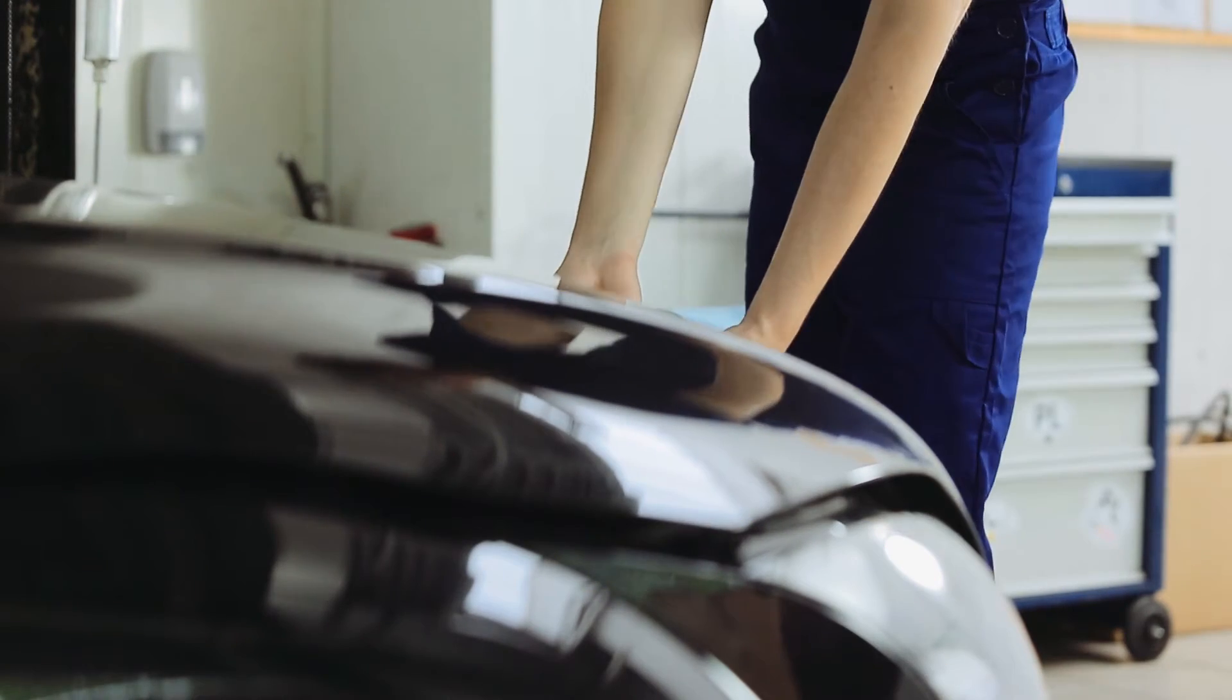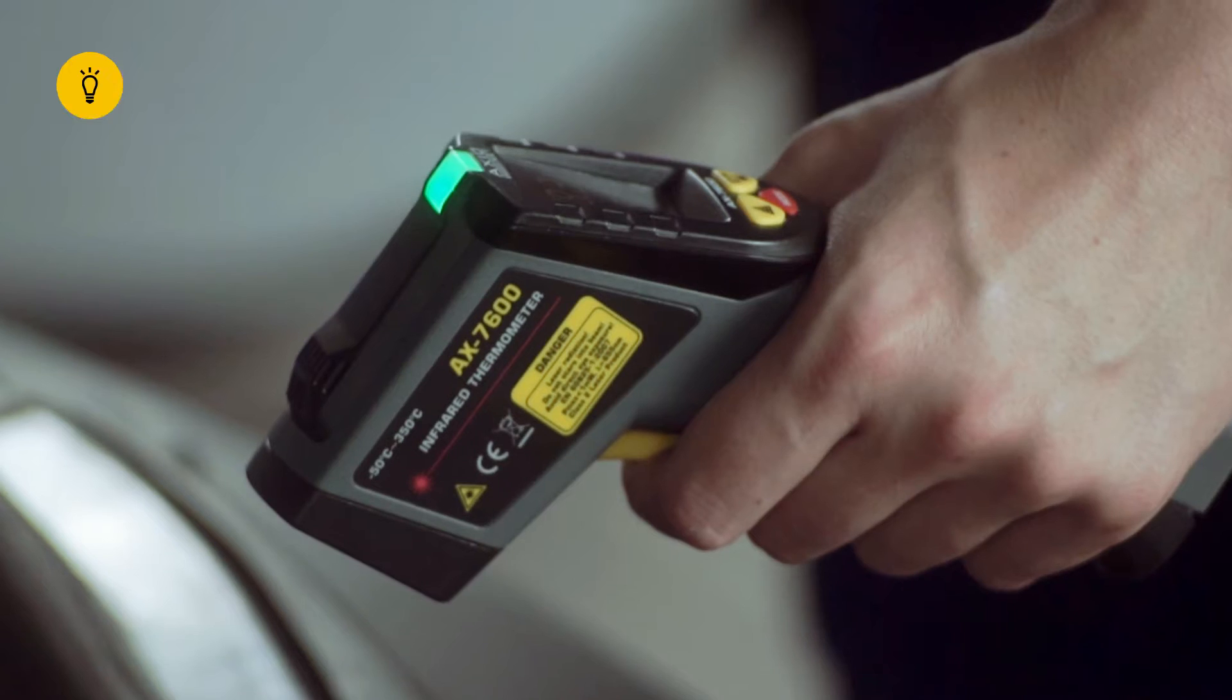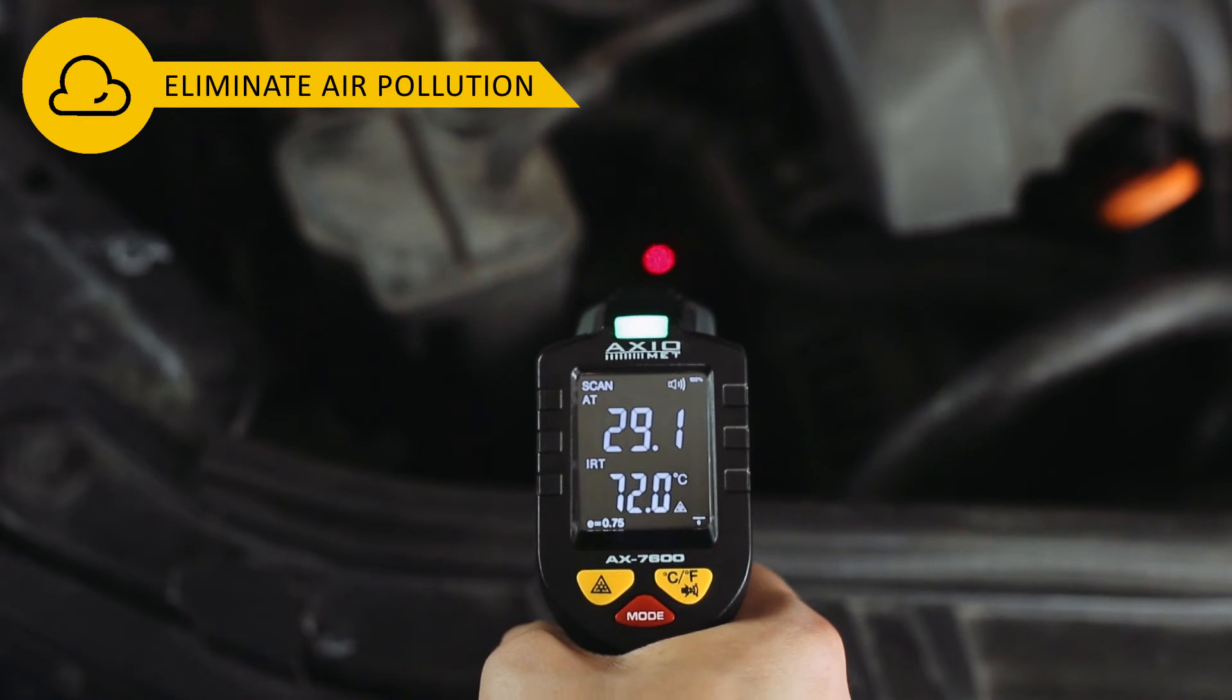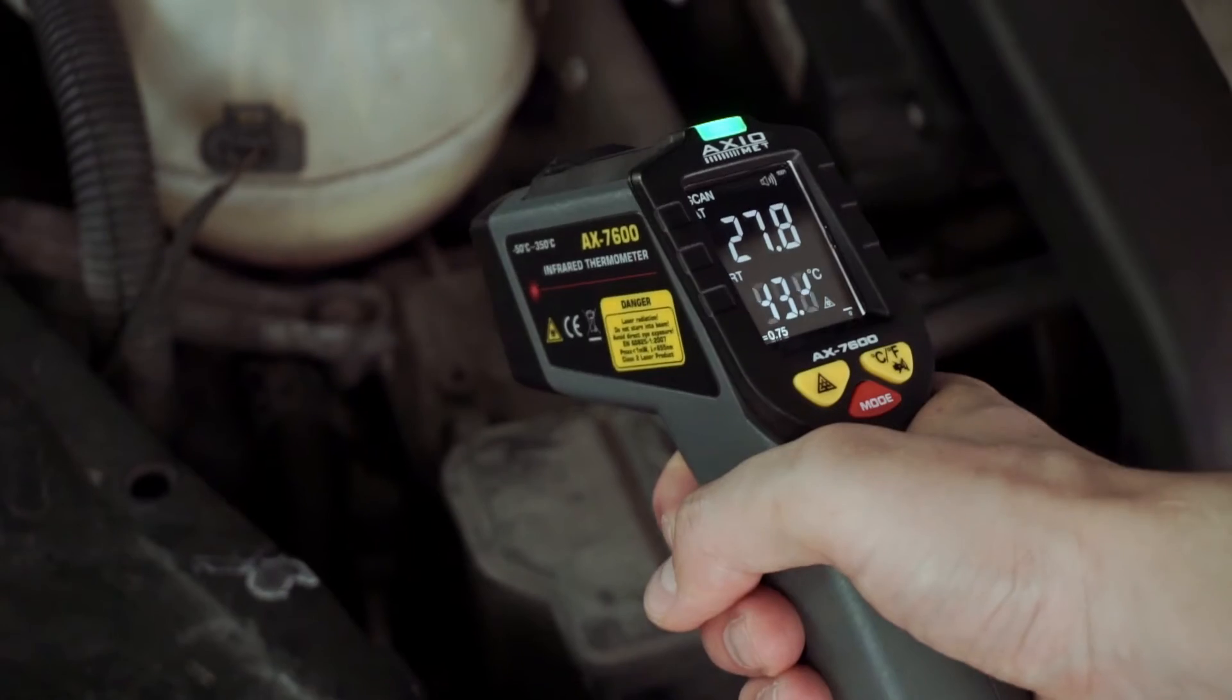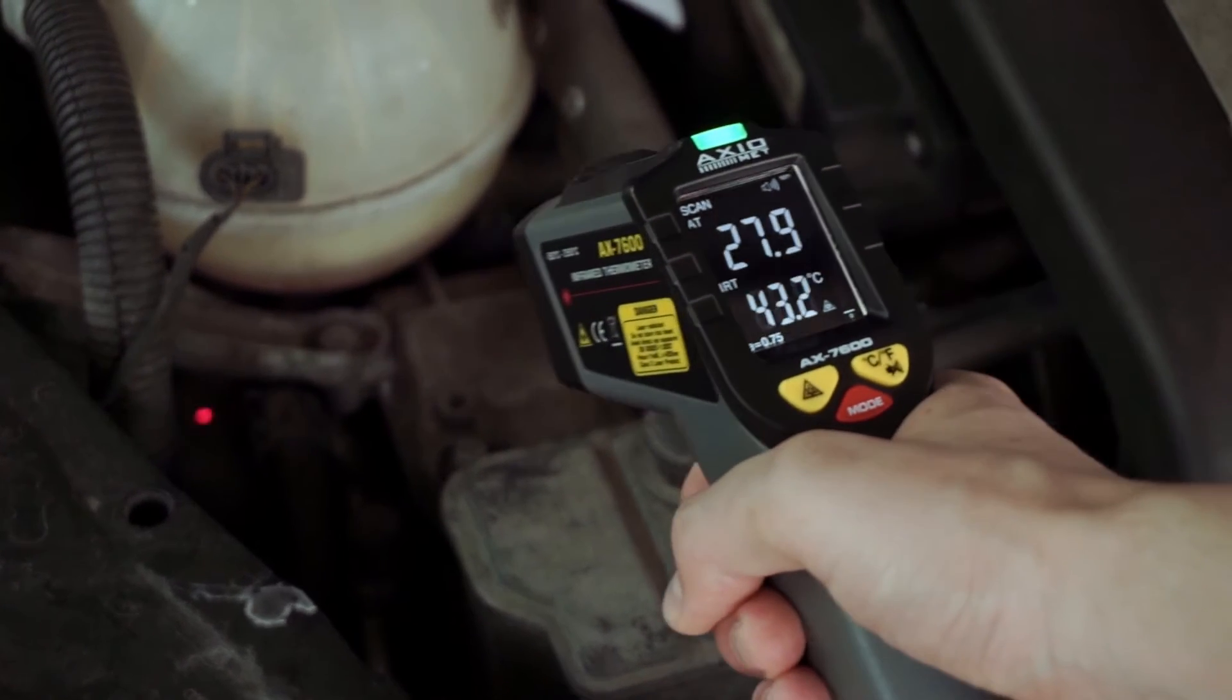To get a reliable measurement, locate illumination of the object and eliminate this illumination in the infrared region. Eliminate air pollution, choose an appropriate measurement distance, and direct the pyrometer perpendicularly to the surface under test.